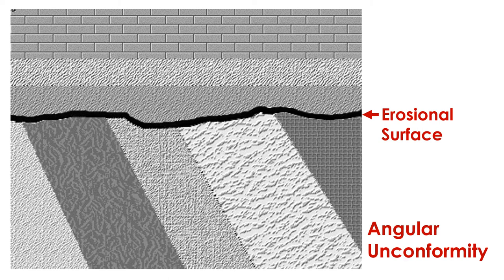In these cases, the lower strata were first tilted as a result of plate tectonics, and then truncated by erosion before the upper strata were laid down above and parallel to the erosional surface. Let's take a moment and walk through this process step by step.